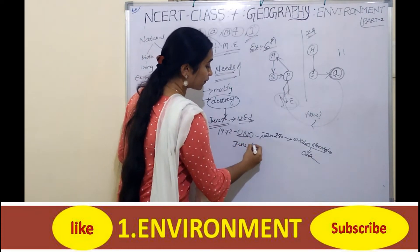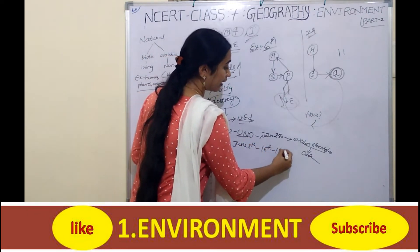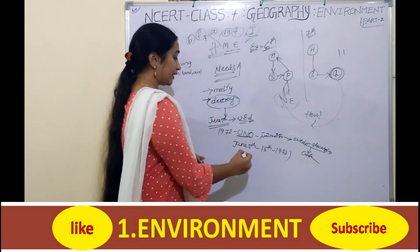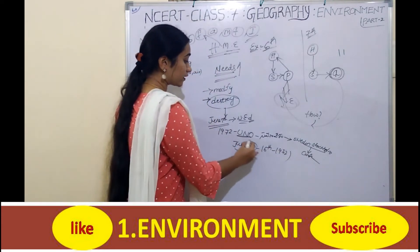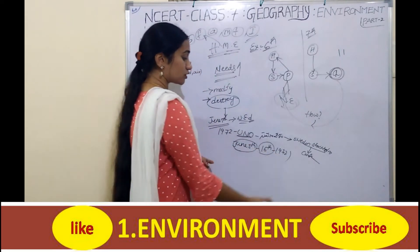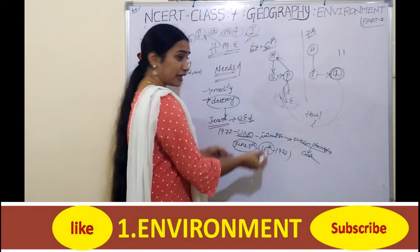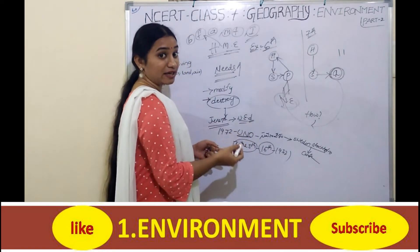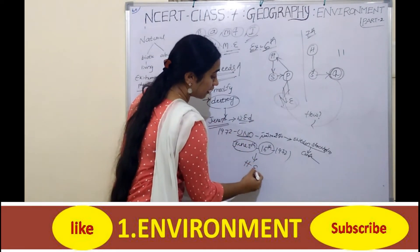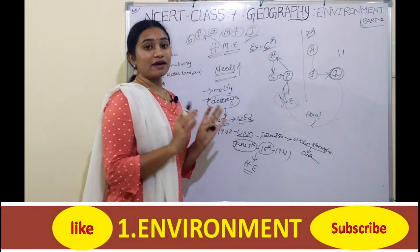The conference was held from June 5th to June 16th, 1972. This was the Stockholm Conference on Human Environment. June 5th was chosen because it was the first day of that Stockholm Conference on Human Environment.